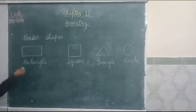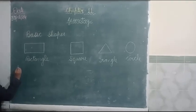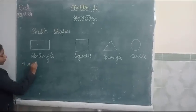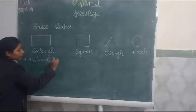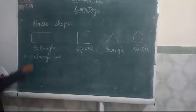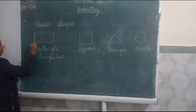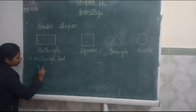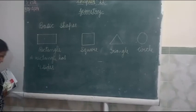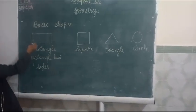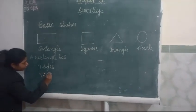Firstly, we know what is a rectangle. A rectangle has how many sides? Four sides. How many sides? Four sides. And four corners. Four sides and four corners.